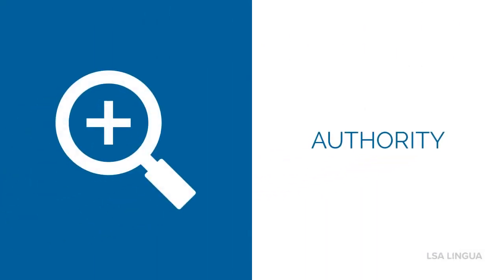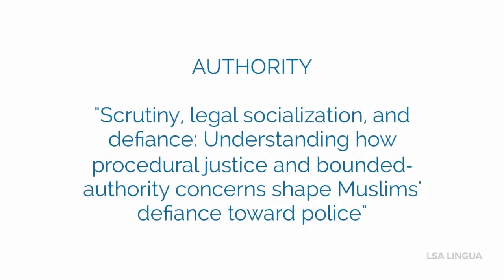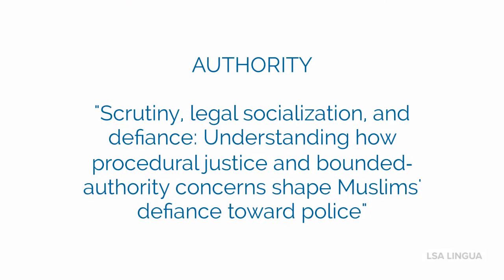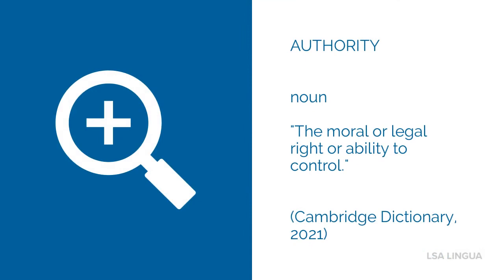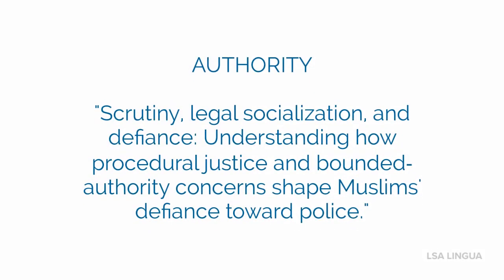Let's now zoom in on the word authority. Let's look at an example: "Scrutiny, legal socialization and defiance — understanding how procedural justice and bounded authority concerns shape Muslims' defiance toward police." Authority is a noun and it means the moral and legal rights or ability to control. Let's look at the example again.